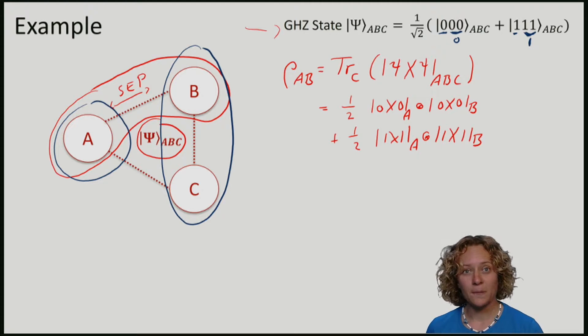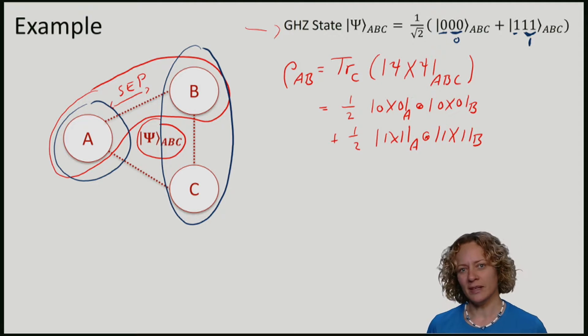In fact, we can see that we could easily produce the GHZ state on A, B, C. If I'm fixing the qubit A, I have the qubit B, and I attach an ancilla C to B.